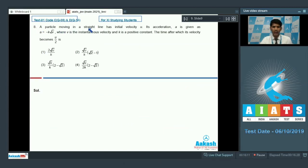A particle moving in a straight line has initial velocity u. Its acceleration a is given as a is equal to minus k root v, where v is the instantaneous velocity and k is a positive constant. The time after which its velocity becomes u by 2. Initial velocity was u and it has to be u by 2. So I would write here, dv by dt is minus k root v, or dv by root v is equal to minus k dt.